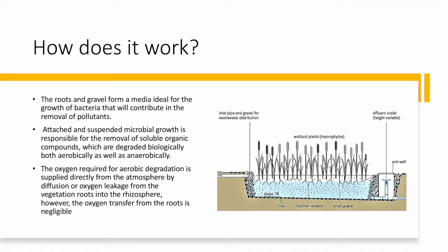The inlet pipe disperses water into the wetland at the top of the inlet section, covered by coarse gravel. The treatment process occurs within the root and gravel area, which forms an ideal media for bacterial growth. These bacteria eat the organic matter and pollutants in the wastewater, with both attached and suspended microbial growth responsible for removing soluble organic compounds.